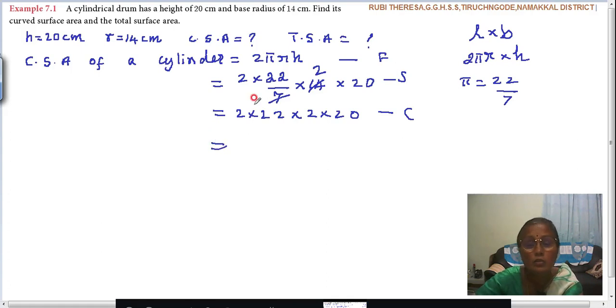Those who are able, you can do it in the next step itself and write the answer. Otherwise, step by step you can go. 2 twos are 4. This calculation according to your convenience I said. Otherwise, 2 into 22 is 44, 44 into 2 into 20. Then 44 into 2 is 88, 88 into 20.